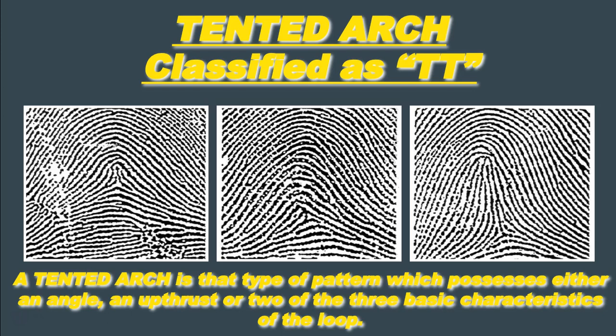When we were talking about loops, there are three essential requirements for a fingerprint to be classified as a loop: a sufficient recurve, a ridge count, and a delta. If we have a fingerprint that has two of those three characteristics but not all three, it can't be a loop — so by default we characterize it as a tented arch. This gives us three different varieties of tented arches: angle-type tented arches, upthrust-type tented arches, and loop-type tented arches.